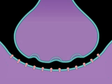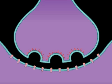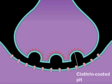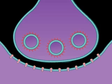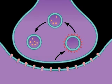The empty vesicles are recycled via endocytosis of clathrin-coated pits and take up more neurotransmitter to start the cycle again.